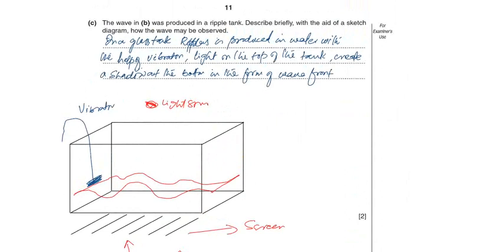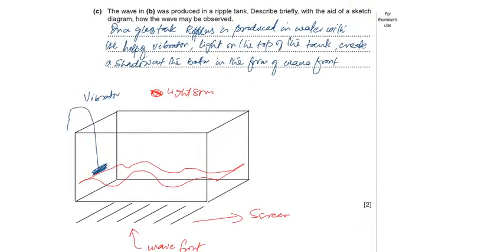We place a vibrator at one end and label it as a vibrator. Put straight upward a light source facing downward. So a reflection of water wave will be at the bottom. So after generating the wave,